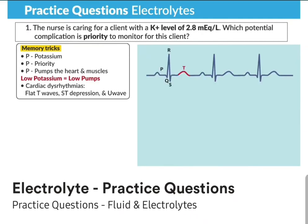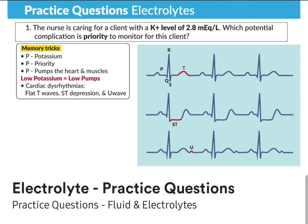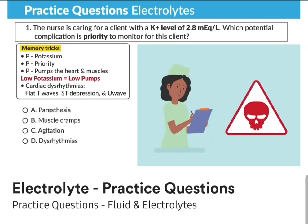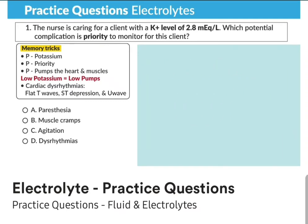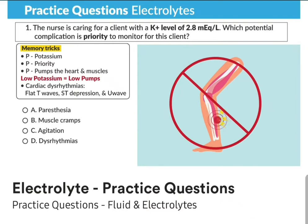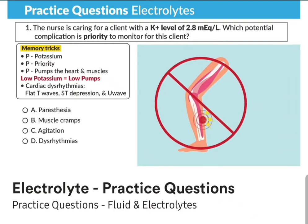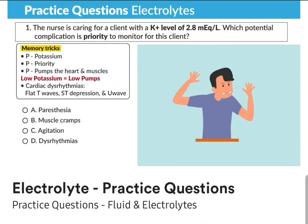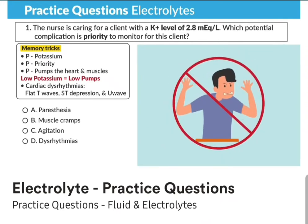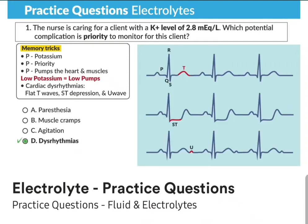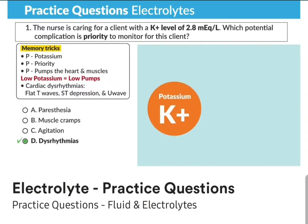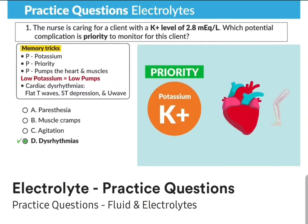Looking at the options: Option A, paresthesia — numbness and tingling — is incorrect; this is not going to kill the client. Option B, muscle cramps, may be painful but again not going to kill the client. Option C, agitation, is very close but incorrect — that's more for low sodium, hyponatremia with cerebral edema. Option D, dysrhythmias, is the most correct — because potassium is priority since it pumps the heart and the muscles.